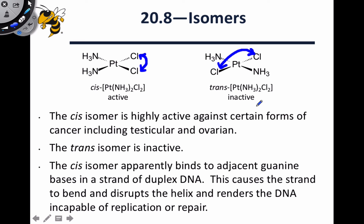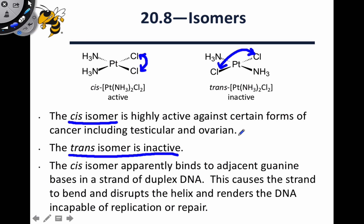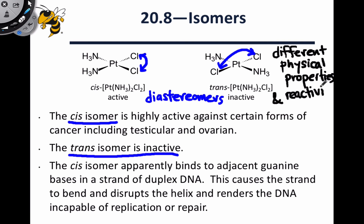This particular complex is known as cisplatin or transplatin. The cis isomer, cisplatin, is effective against certain forms of cancer because it works by binding to DNA — specifically, the two chloride ligands are displaced by basic nitrogen atoms in the nitrogenous bases of DNA. This causes a kink in the DNA that prevents replication or repair. The trans isomer is inactive because the positions of its two chloride ligands are incompatible with the helical structure of DNA. This illustrates how diastereomers can have dramatically different physical properties and reactivity.